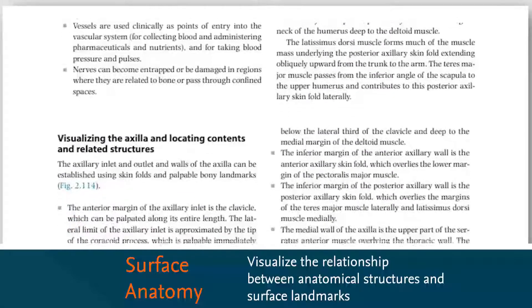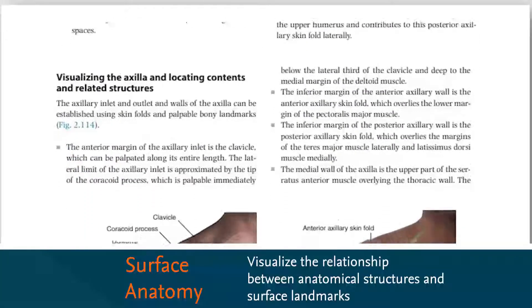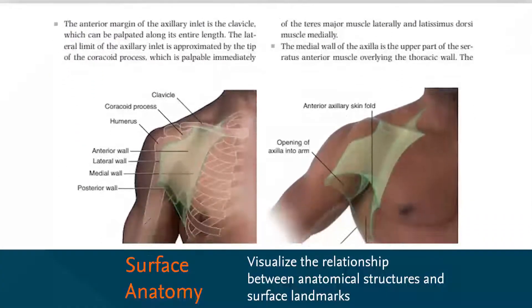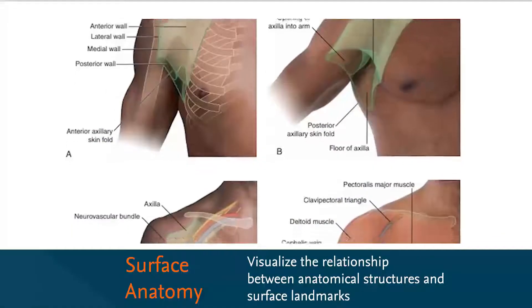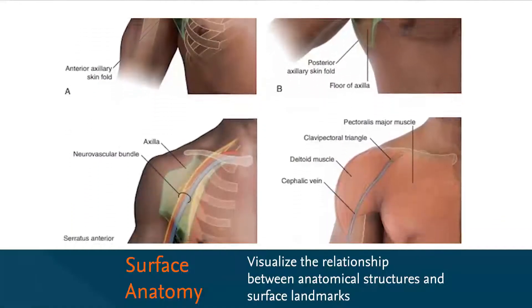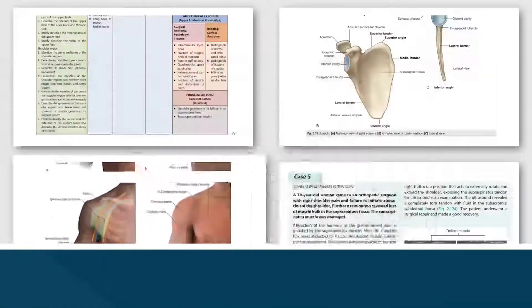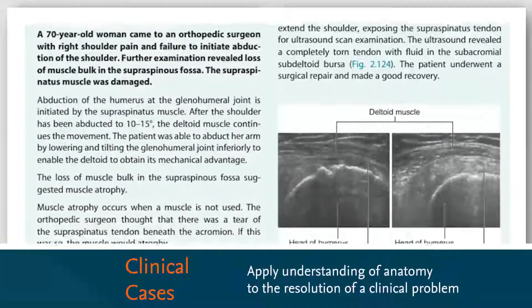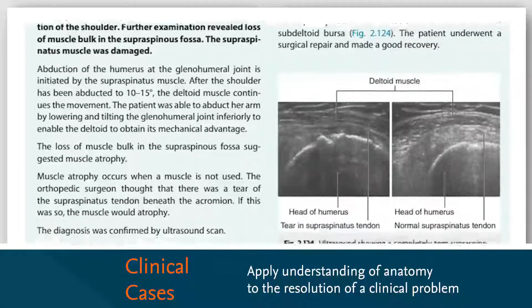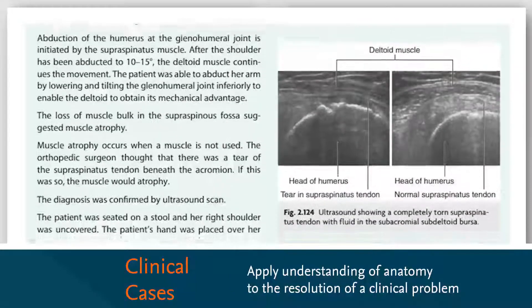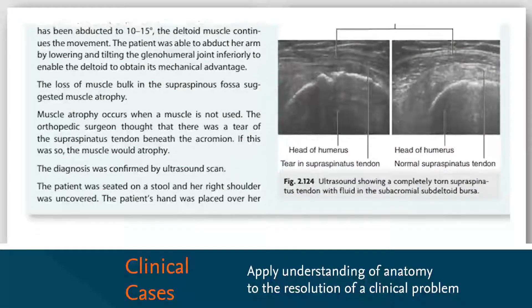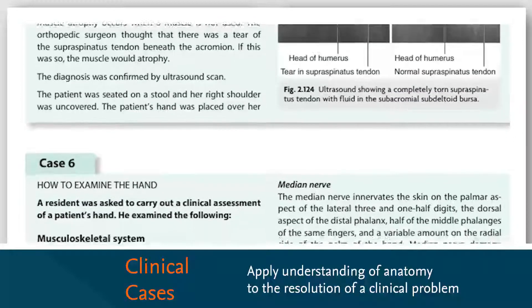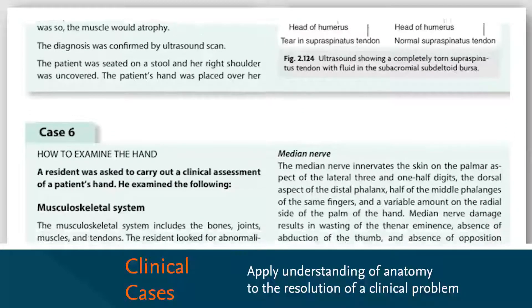The regional anatomy section provides more detailed anatomy along with a substantial amount of relevant clinical correlations. Surface anatomy assists in visualizing the relationship between anatomical structures and surface landmarks, with practical applications of the anatomical information.